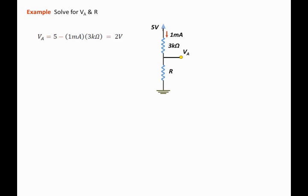To solve for R, which is the second part of the problem, we know the voltage across the resistor, that is Va on the top end, and ground on the bottom end. We know the current flowing through the bottom resistor R is the same as the current that is flowing through the 3 kilo ohm resistor, so the current through the bottom resistor is also 1 milliamp.